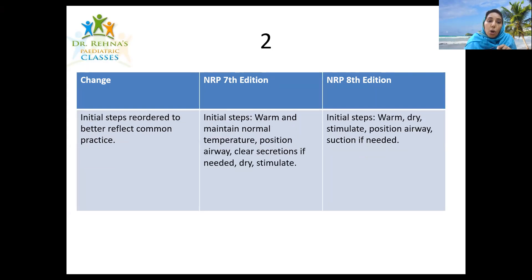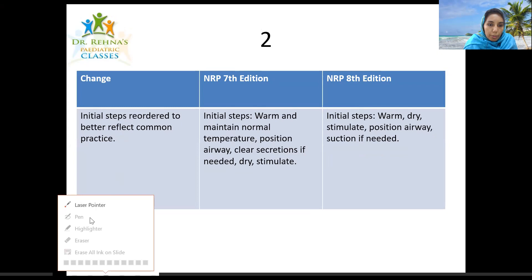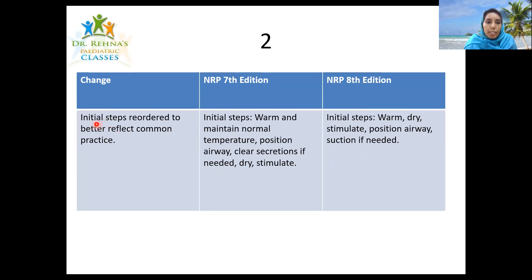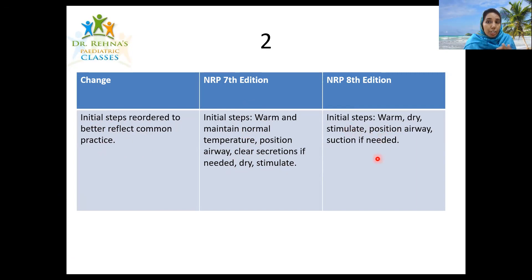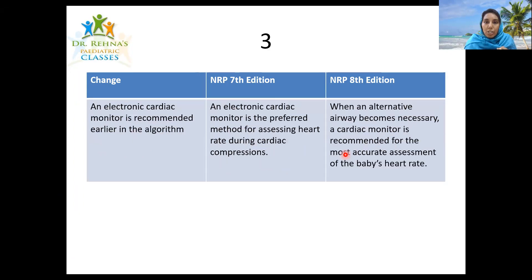The second change: the initial steps are reordered to reflect common practice. In the NRP seventh edition, the order was: warm and maintain normal temperature, position the airway, clear secretions if needed, dry and stimulate. What we actually do in practice is: get the baby, warm and dry, stimulate, then if the baby is not right, position the airway and suction if required. The steps are the same but reordered to reflect common practice.